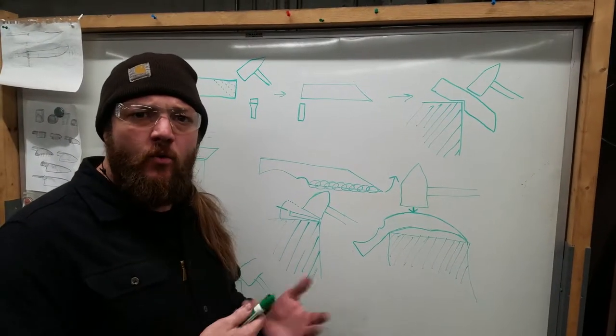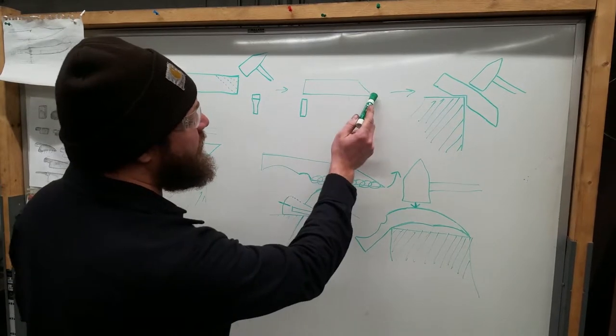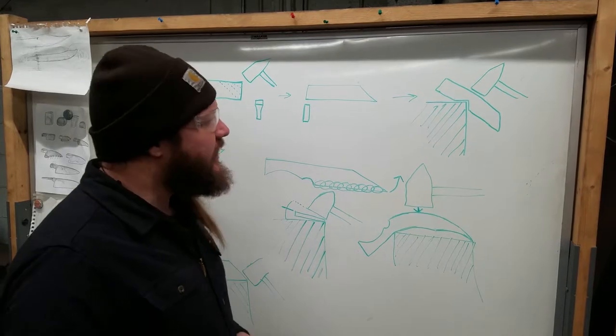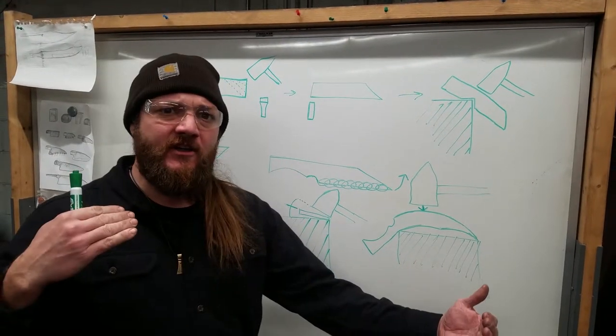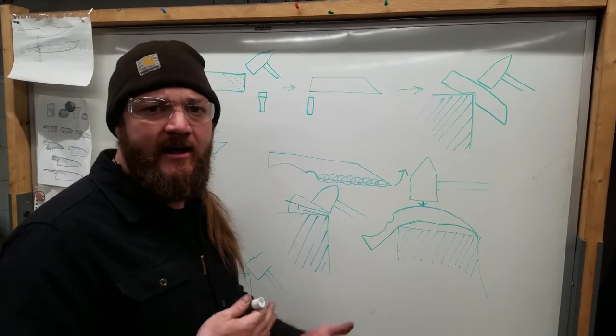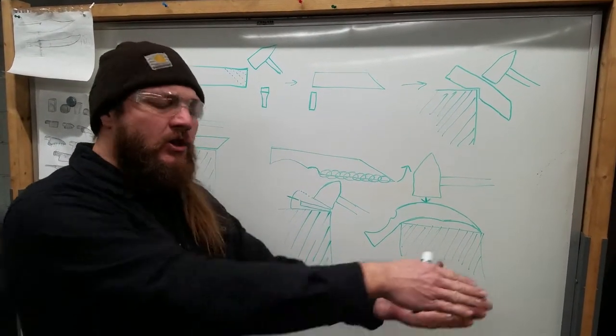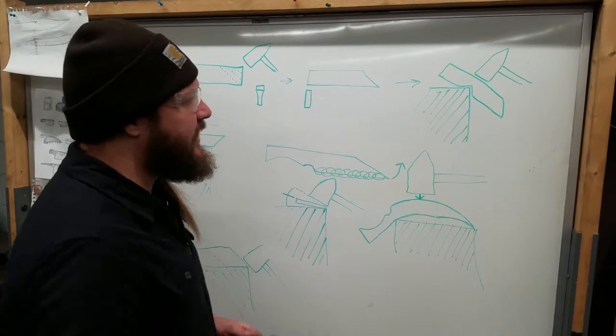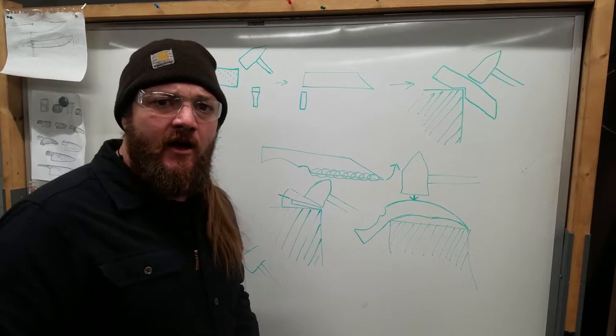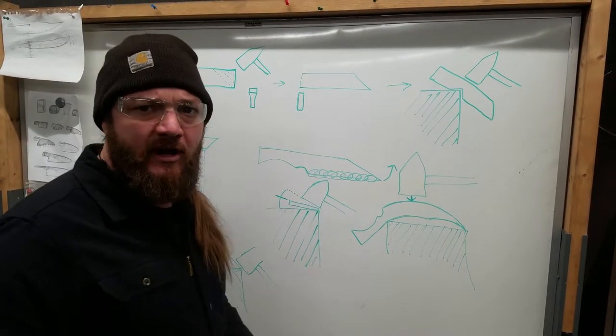So now we have our tip forged in. The question is the length of this bevel that we have drawn out here is going to dictate the length of our clip on our knife. So that's going to be up to you what kind of knife you want to forge out, how blunt you want that clip to be, or how long and pointy you want that to be. That will all be dictated by the length and the angle of the bevel that you just put onto the end of the bar.